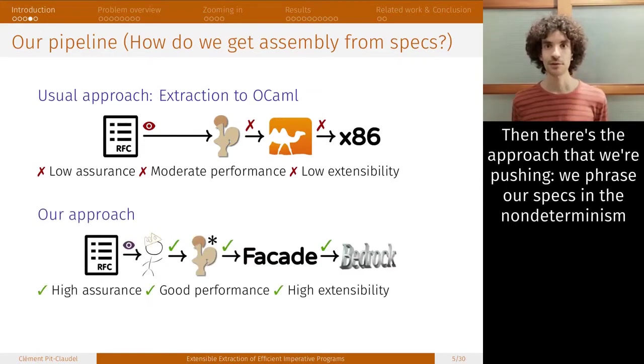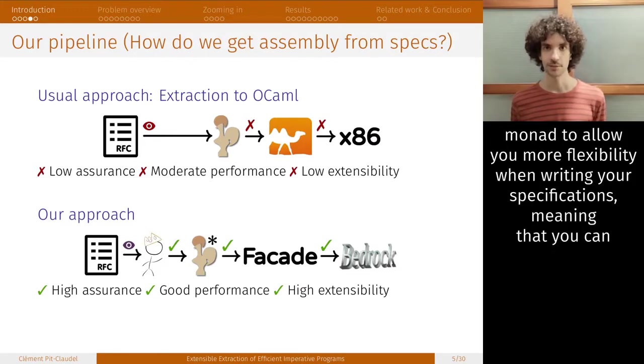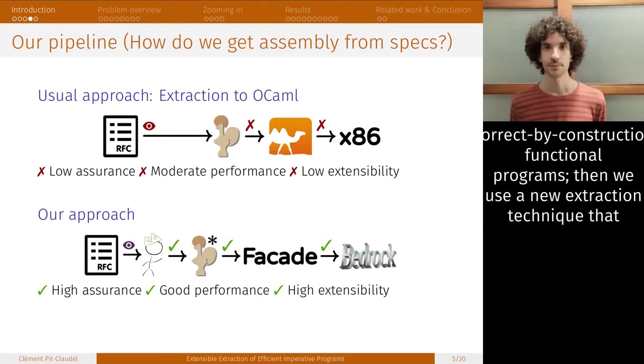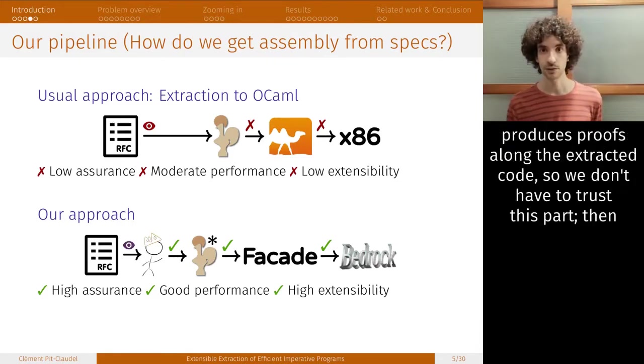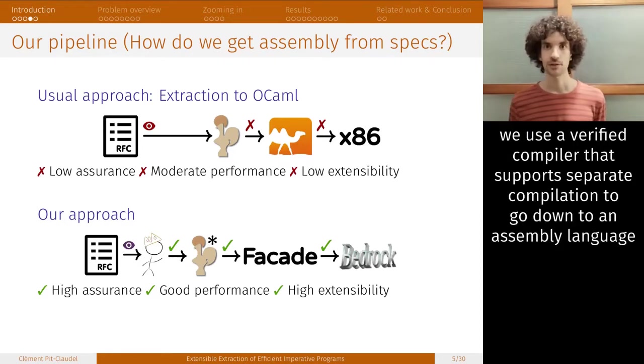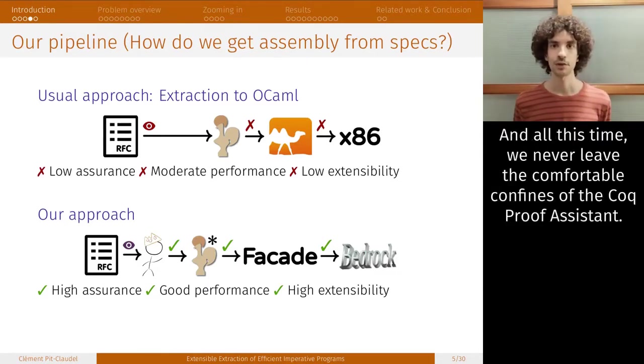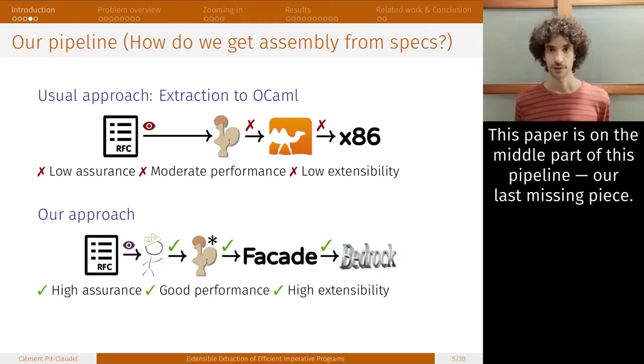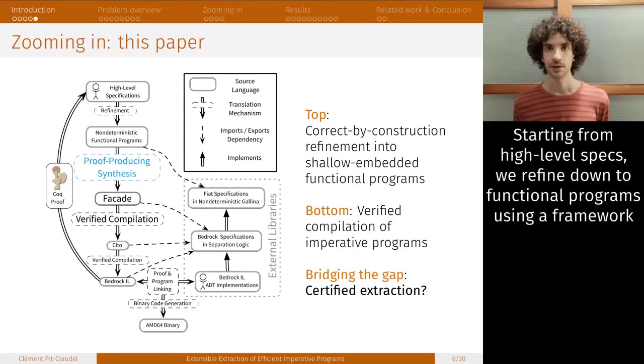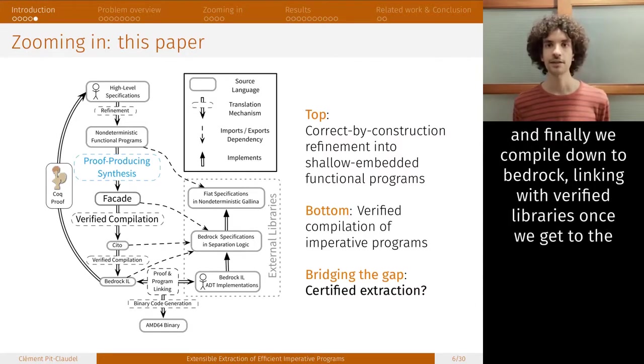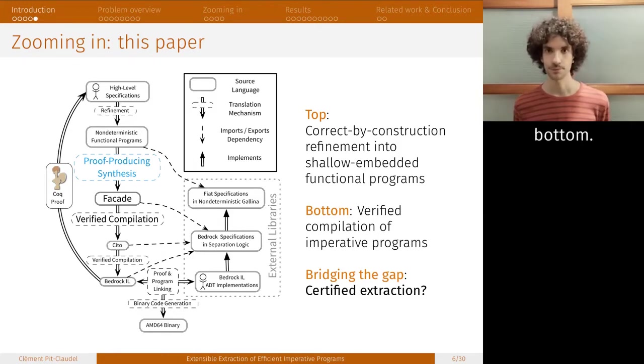Then there's the approach that we're pushing. We phrase our specs in the non-determinism monad to allow you more flexibility when writing your specifications. Then we use automated refinement to derive correct by construction functional programs. Then we use a new extraction technique that produces proofs along the extracted code so that we don't have to trust this part. And then we use a verified compiler that supports separate compilation to go down to assembly, a version of assembly called Bedrock. And when we get there, we link against handwritten and hand-verified assembly data structure libraries. And all this time, we never leave the comfortable confines of the Coq proof assistant. This paper and the talk is on the middle part of this pipeline, our last missing piece.